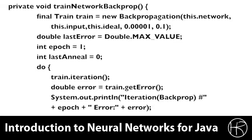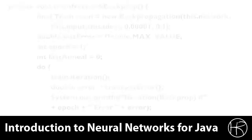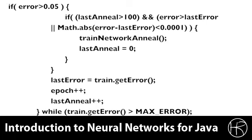We display the current iteration number, which is the epoch number, and the error. In the next slide we'll see how we detect that back propagation should be replaced with simulated annealing. If the error is greater than 5%, then we consider possibly invoking simulated annealing. If the last time we have annealed is over 100 iterations — meaning we've done 100 iterations of back propagation — and the error is greater than the last error, meaning back propagation has started to slightly increase the error over one iteration and is no longer effective, then we train with simulated annealing.